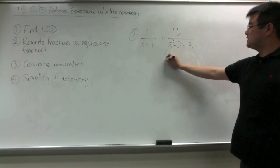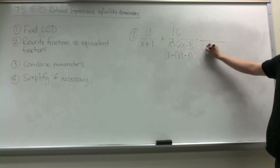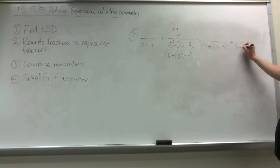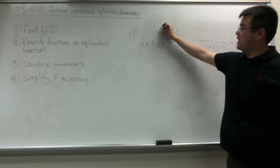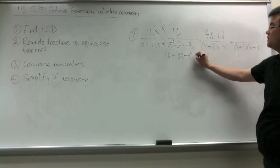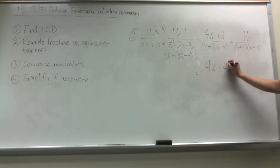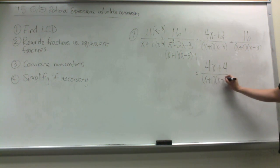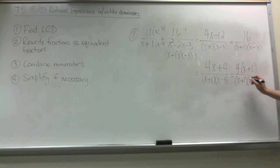In our last example, we factor the second fraction's denominator to (x plus 1)(x minus 3). So the common denominator is (x plus 1) times (x minus 3). We multiply the first fraction by (x minus 3) to get the LCD, distributing the 4 to get 4x minus 12. For the second fraction, it didn't change, so we multiply by 1; 16 times 1 is 16. Combining numerators, we get 4x plus 4 over (x plus 1)(x minus 3). We factor the numerator by the GCF of 4, then simplify the (x plus 1) binomials, giving a final answer of 4 over (x minus 3).